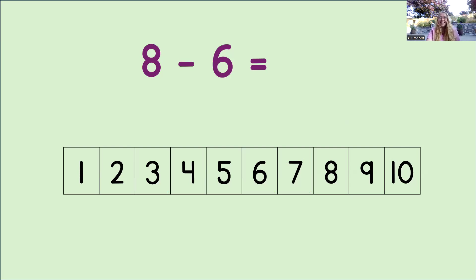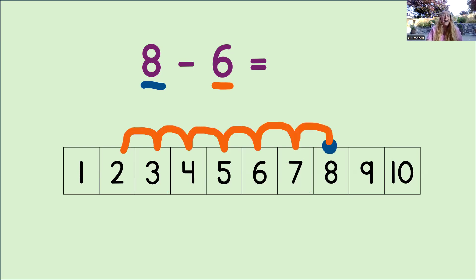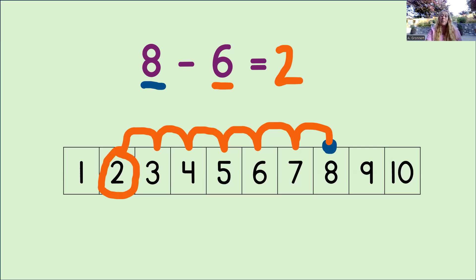Here's another problem for us. What do we do first? Yeah, we look at the minuend. That's the number 8. Then we mark that number on the number line with a big dot. After that, we look at the subtrahend. That's the number 6. And now we know that we need to count back 6 to subtract. Let's do it: 1, 2, 3, 4, 5, 6. Wow, where did we land? Yes, we landed on the number 2. So we circle the 2 and finally we mark that number into the equation. So now we know 8 take away 6 equals 2. Good work.